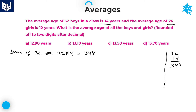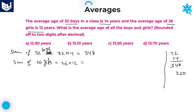After that, the average age of 26 girls is 12 years. So we have 32 boys and 26 girls. Therefore, sum of 26 girls = 26 × 12. Calculating: 26 × 12 = 312. That is the sum of 26 girls.